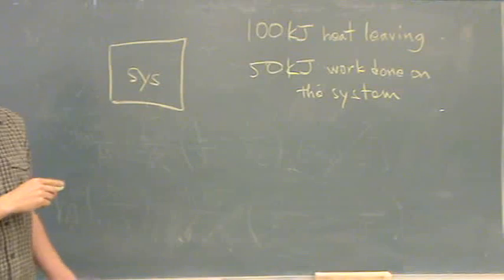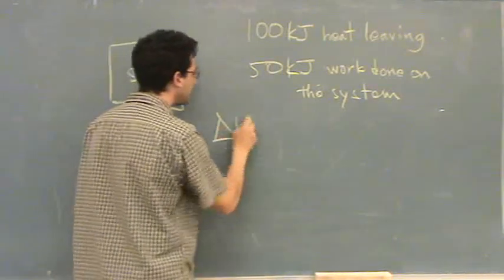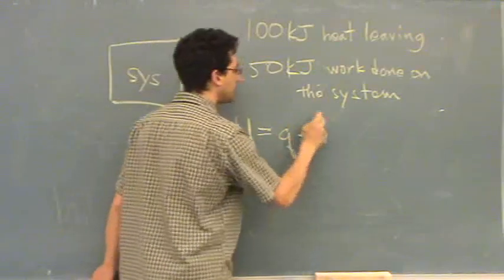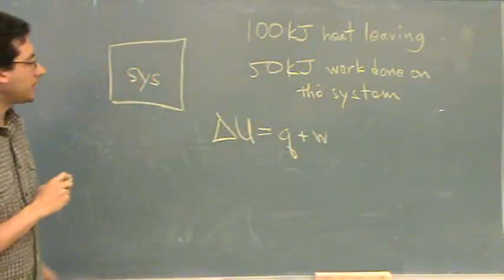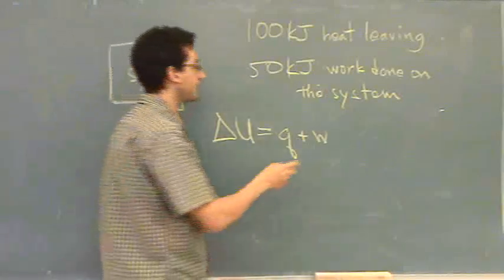Okay, so you'd get information like that, and so all you would do is say, delta U, first law, is Q plus W, and it'd be essentially, if you can get your signs together.